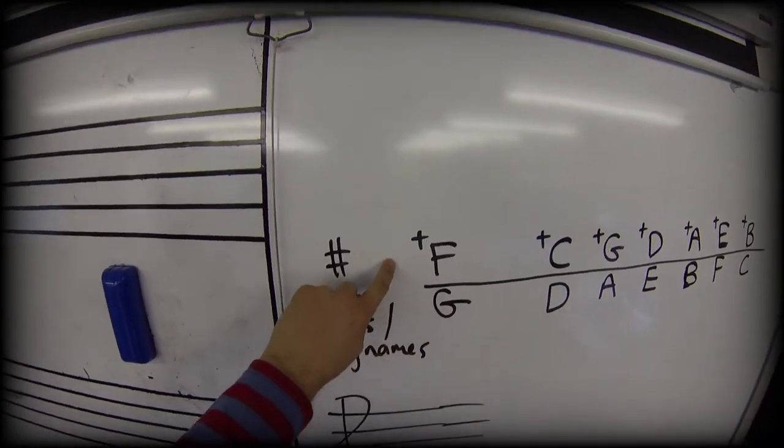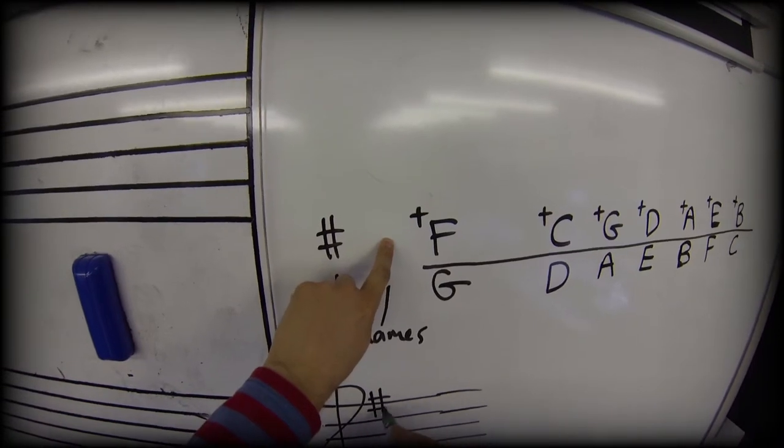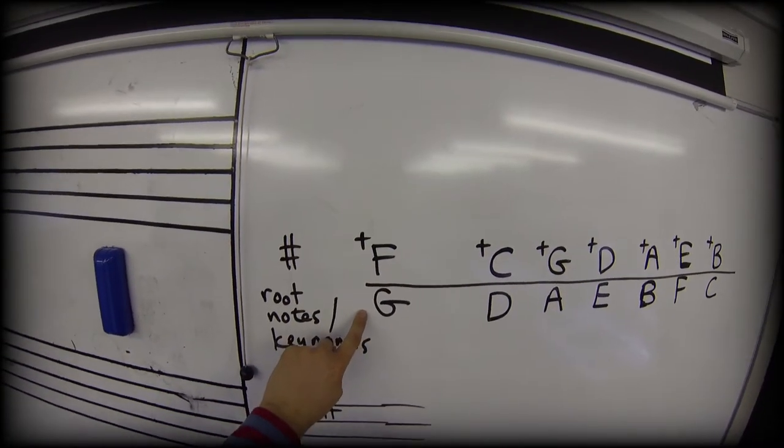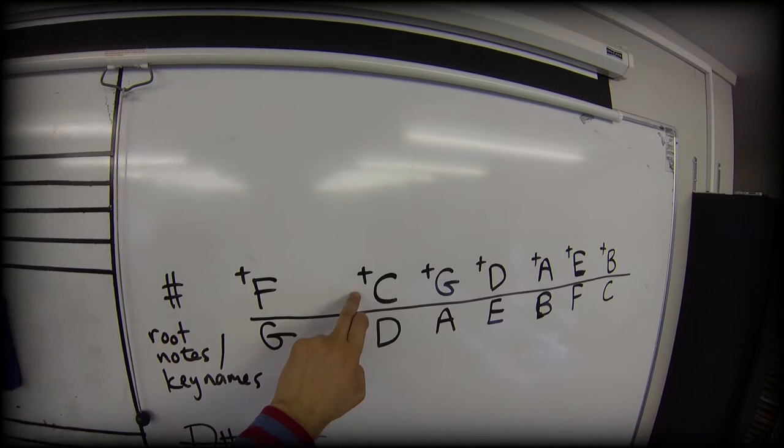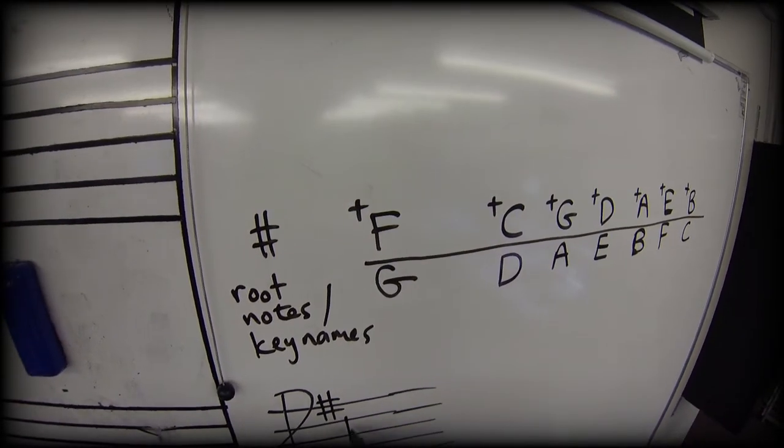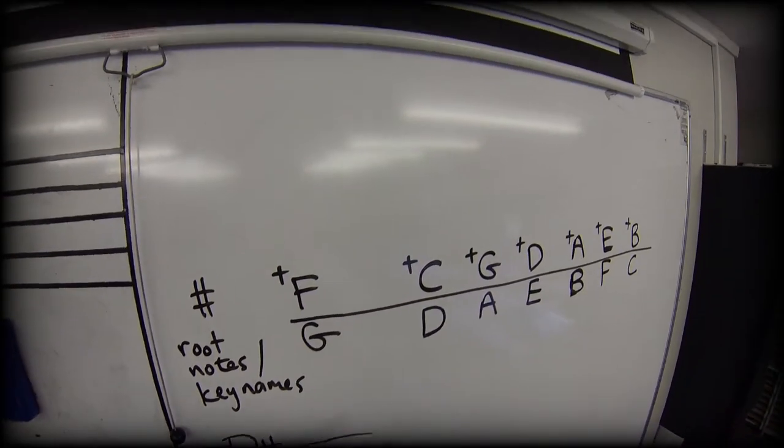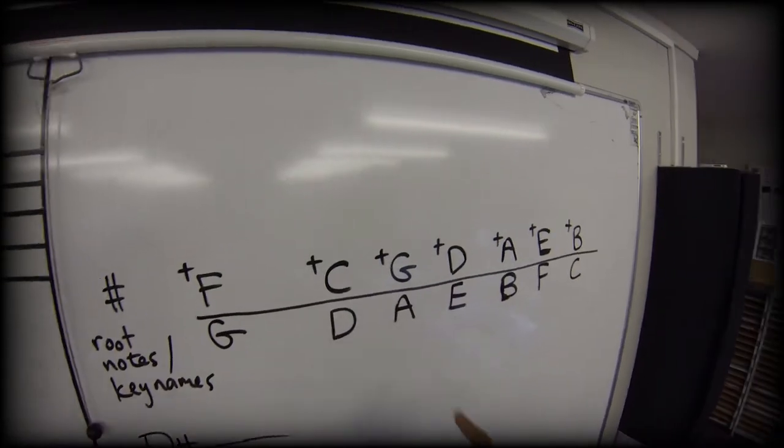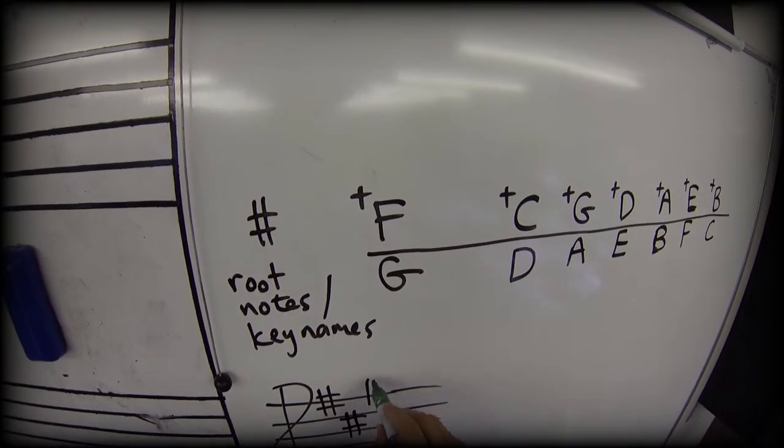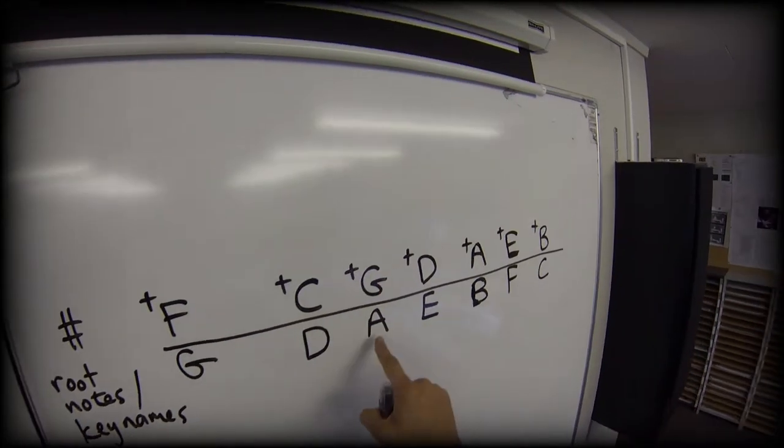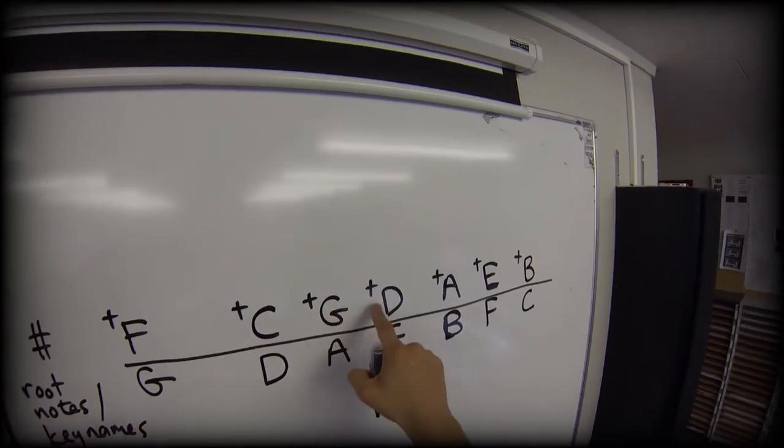If I add F sharp, I make the key of G major. If I add a C sharp to that F sharp, I make the key of D major. If I add a G sharp, I make A major.